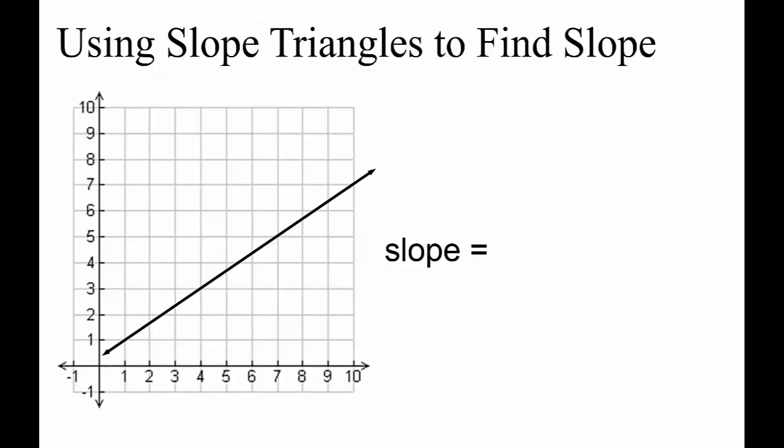When we need to find the slope of a graph, we start by choosing any two points. I'm going to slide along the line and look for two easy points. Here's one at 4, 3 and here's another one at 10, 7.